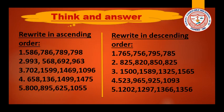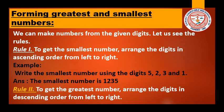Girls, please try out the following problems at home. There are two types of sums: rewrite in ascending order and rewrite in descending order. Now let us discuss forming the greatest and smallest numbers. We can make numbers from given digits.